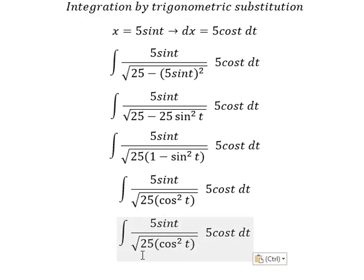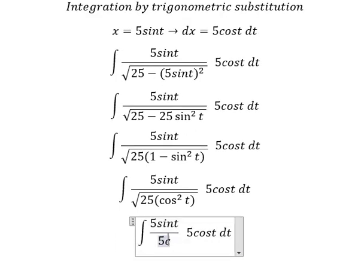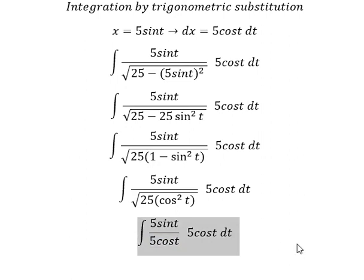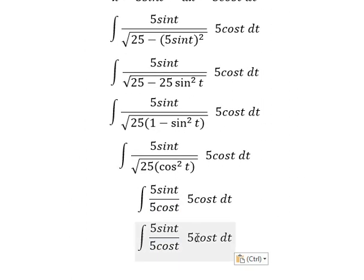The square root of 25 cosine squared t equals 5 cosine t. We simplify by canceling 5 cosine t in the numerator and denominator.